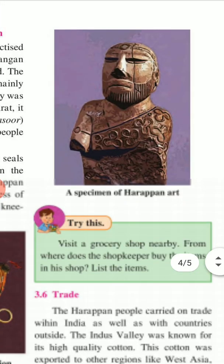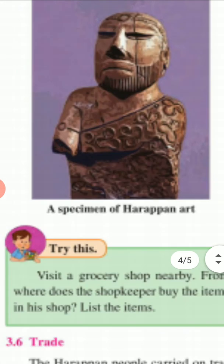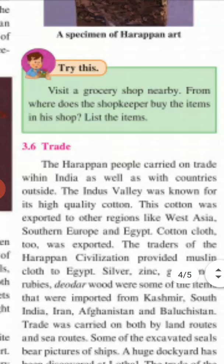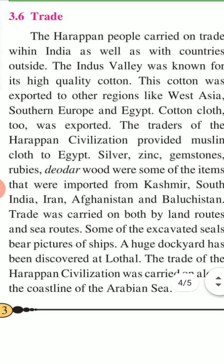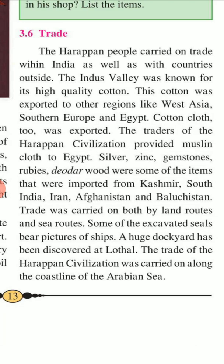A statue found at a Harappan site presents an excellent specimen of their art. It shows the man's facial features very clearly, and a robe with a beautiful trefoil pattern is draped around his shoulder. The Harappan people carried on trade within India as well as with countries outside.